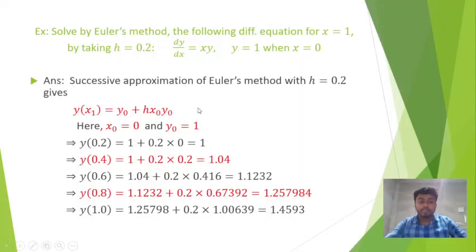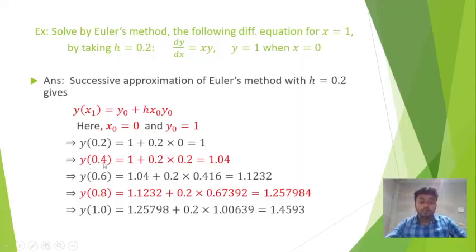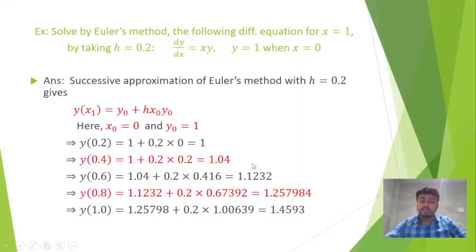Here the initial condition is x₀ = 0 and y₀ = 1. Putting h = 0.2 into the formula we get y(0.2) = 1. Similarly we get y(0.4) = 1.04. Now similarly we find y(0.6), y(0.8), and lastly y(1.0), which we are asked to find, and the value is 1.4593. Thus we can solve any first order differential equation using Euler's method.